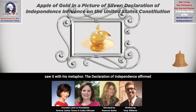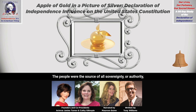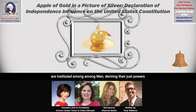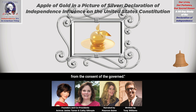The Declaration of Independence affirmed the Republican principle of popular government. The people were the source of all sovereignty or authority in the representative government and gave their consent for it to govern. It stated that to secure these rights, governments are instituted among men, deriving their just powers from the consent of the governed.